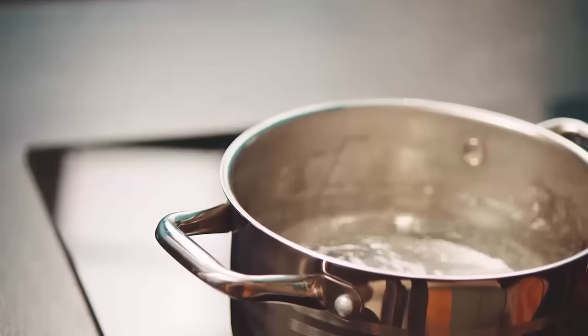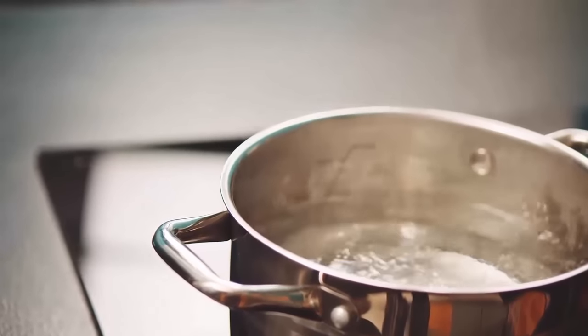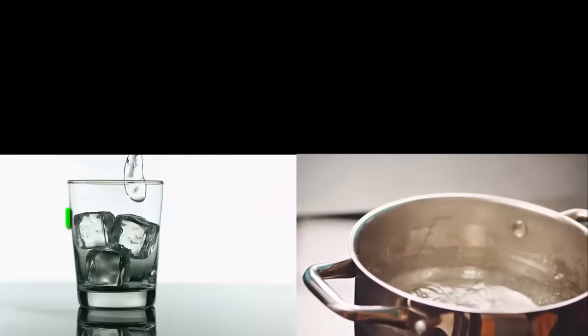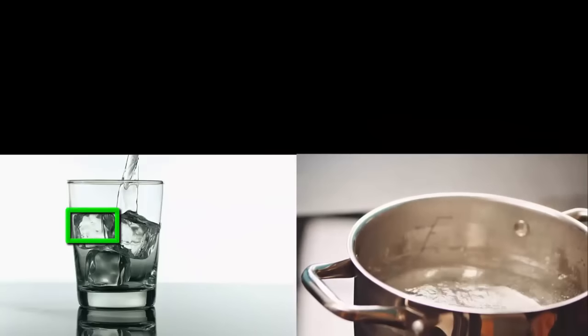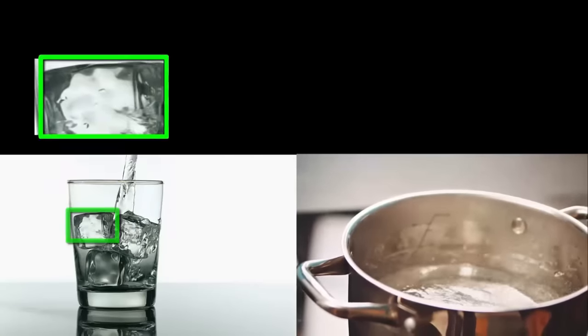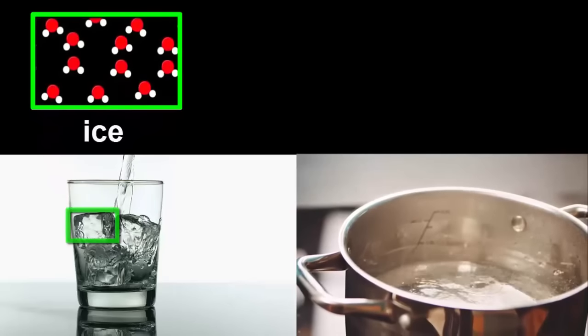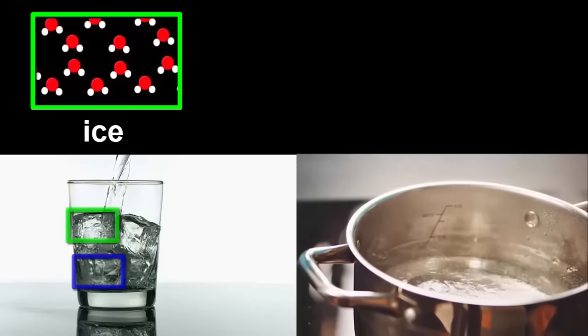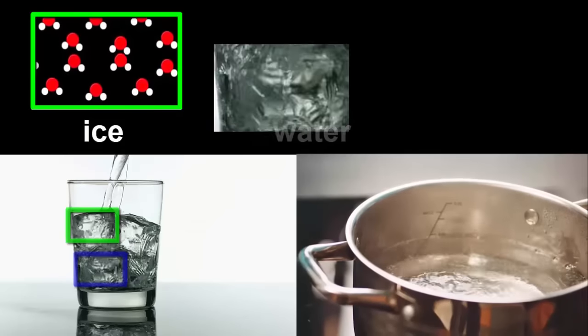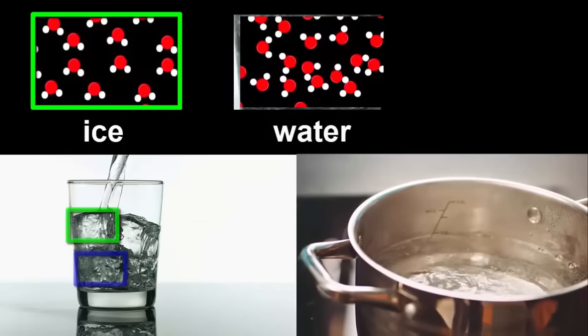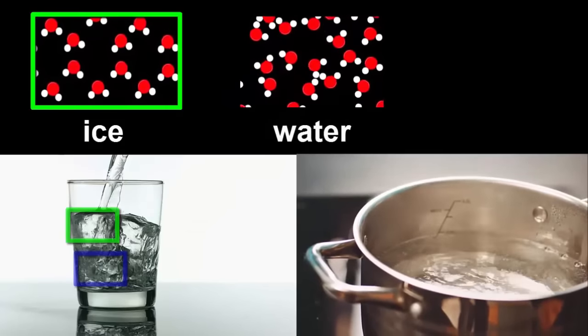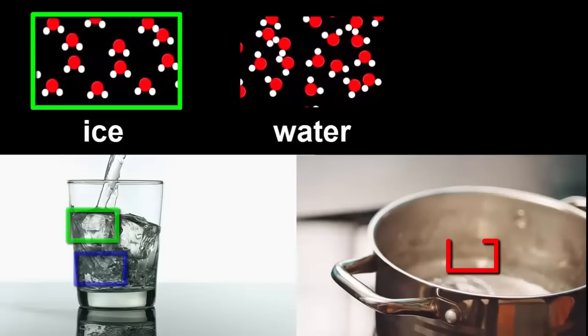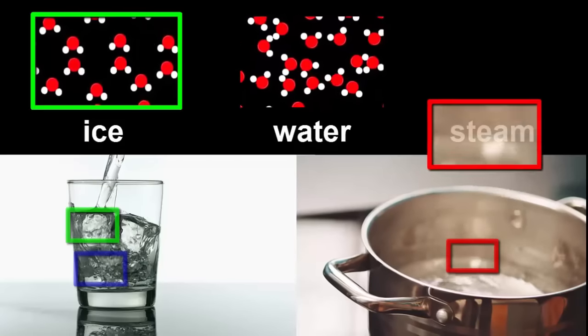There seems to be a connection between the speed of the molecules of a substance and how hot it is. Ice is the coldest form of H2O, zero or below, and its molecules go quite slowly. Water is warmer, between 0 and 100, and its molecules are faster. And steam is the hottest, 100 or above, with its molecules going the fastest.